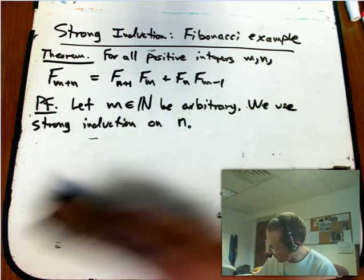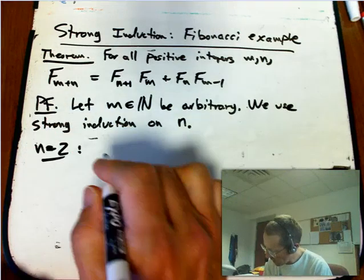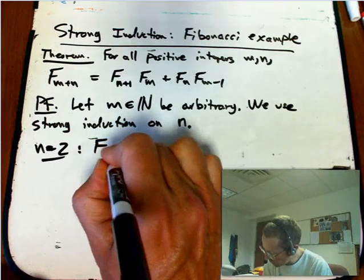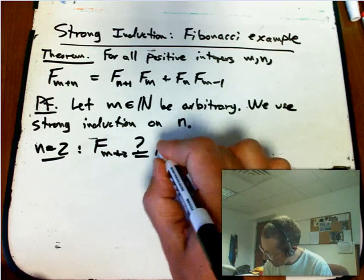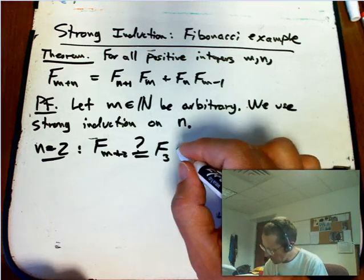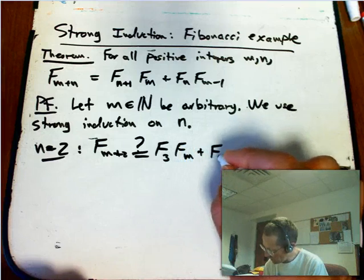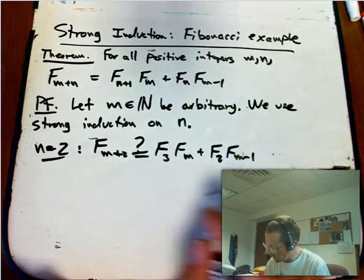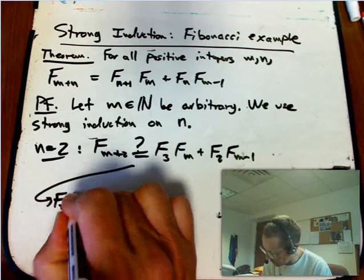Let me just erase in place here. n equals 2. So f m plus 2, does that equal f 3 times f m plus f 2 times f m minus 1? And yeah, absolutely. This is again what we checked before.